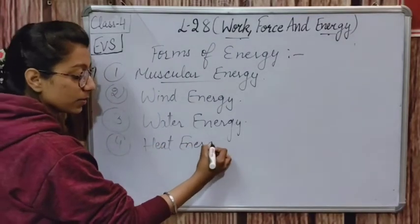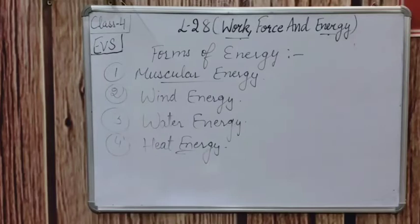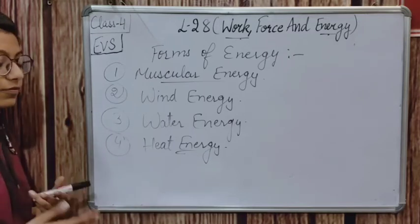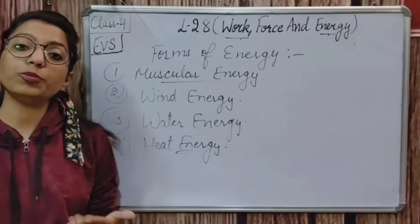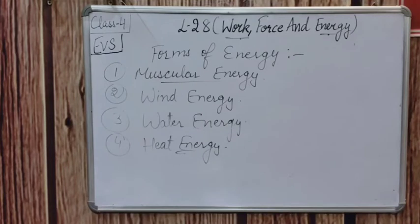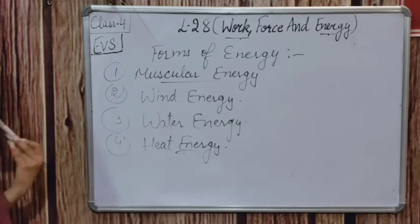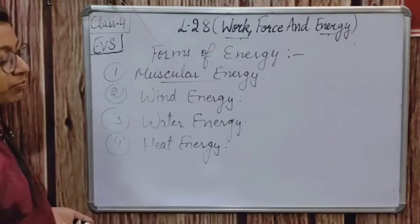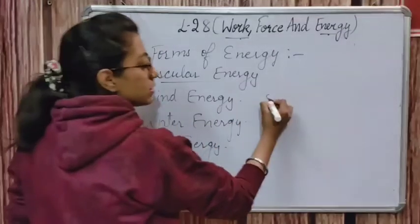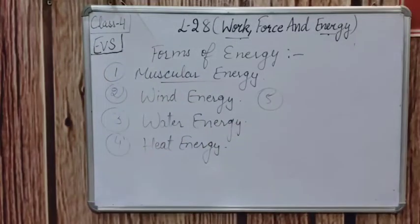Next is heat energy. We get heat from the sun. Energy present in a hot body is called heat energy. It is obtained by burning fuels like wood, coal, and petrol. The heat produced by burning petrol in a car engine makes the engine work and provides the energy needed to run the car.